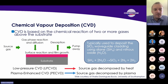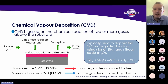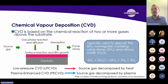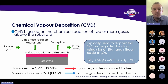Moving on to deposition — we don't always want to remove things; we sometimes wish to add layers. There are two key types: low pressure chemical vapor deposition (LPCVD) and plasma enhanced chemical vapor deposition (PECVD). The concept of both is that we input some gases and break them down so they react in the chamber and cause the growth of a film.